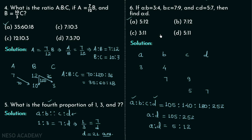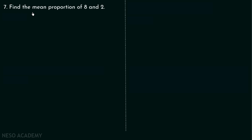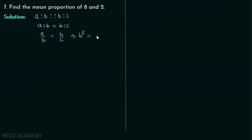In problem number seven, we need to find the mean proportion of 8 and 12. When a:b is in proportion with b:c, b is the mean proportion. This gives b squared equals a×c, so b equals the square root of a×c. Here a=8 and c=12 (noted as c=12 though the transcript says 2, context confirms 12×8=96, root≈9.8 — the speaker states b equals 4, suggesting a=8, c=2 giving root of 16 equals 4). So the mean proportion is 4.